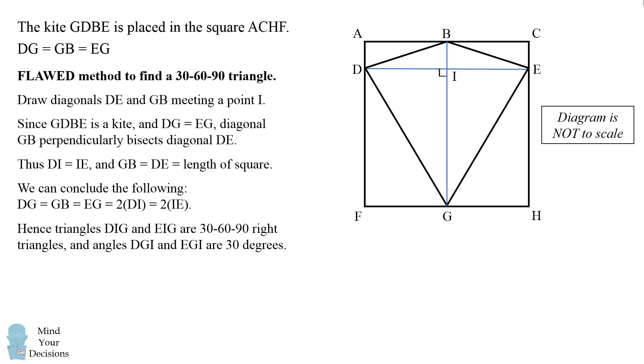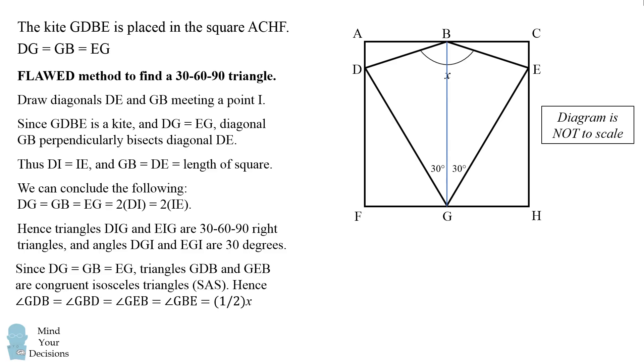The angle that's opposite the leg that's shorter has 30 degrees. Therefore, angles DGI and EGI would be 30 degrees. From there, I said let's look at the isosceles triangles DGB and BGE. Now since DG equals GB equals EG, these triangles are congruent isosceles triangles by side angle side.